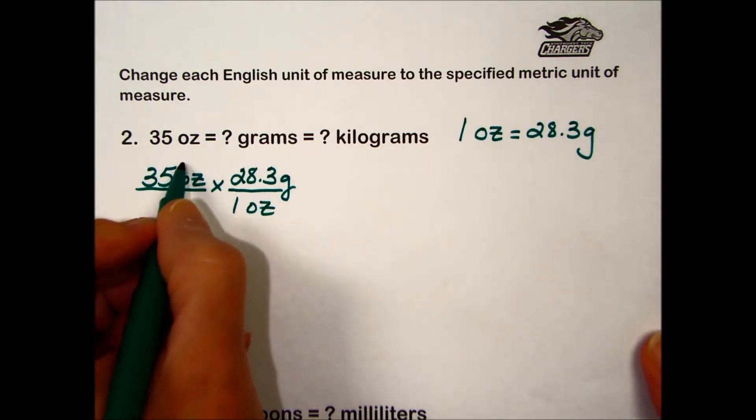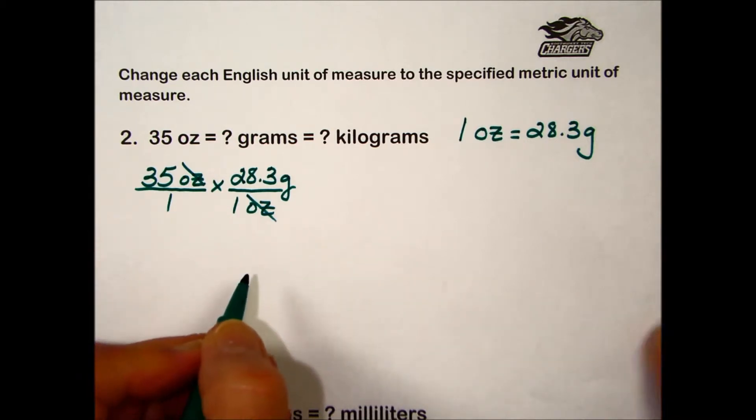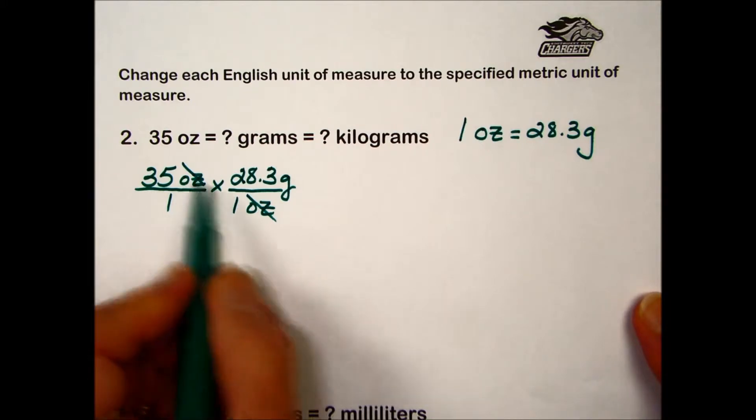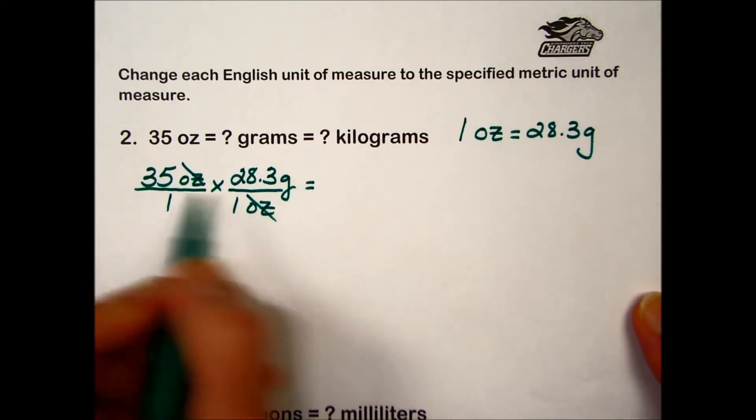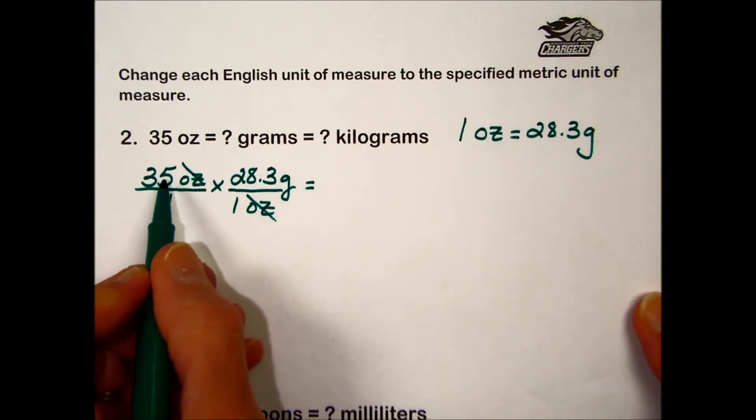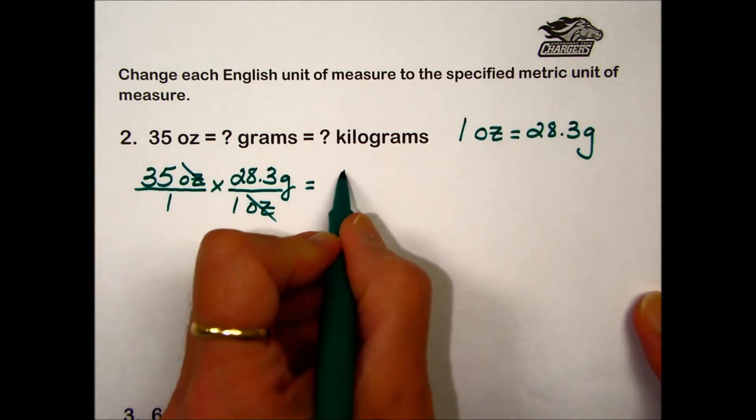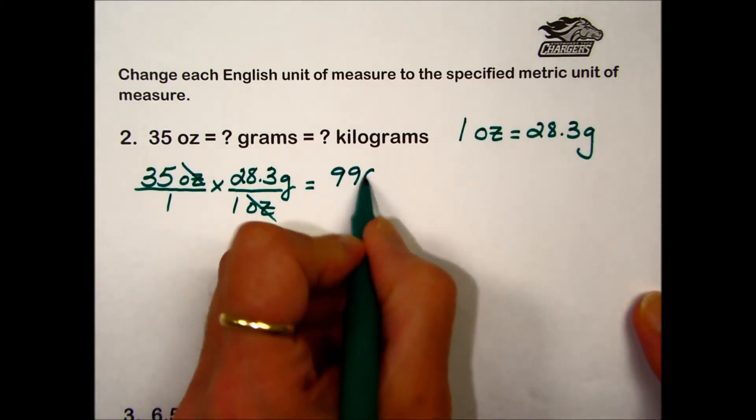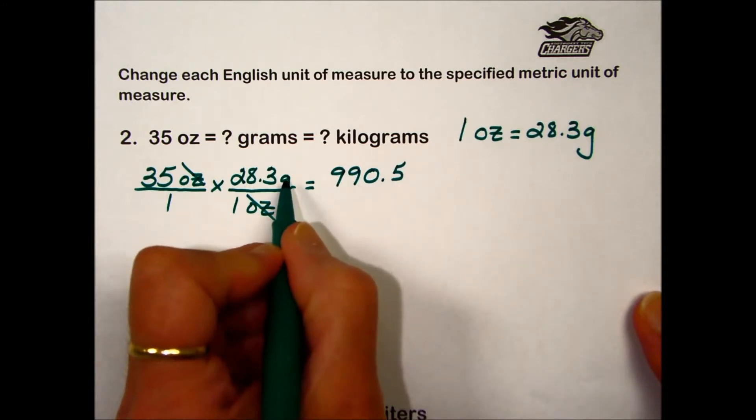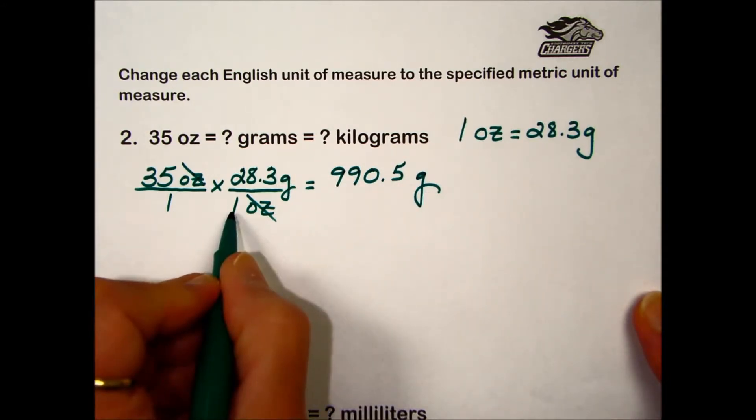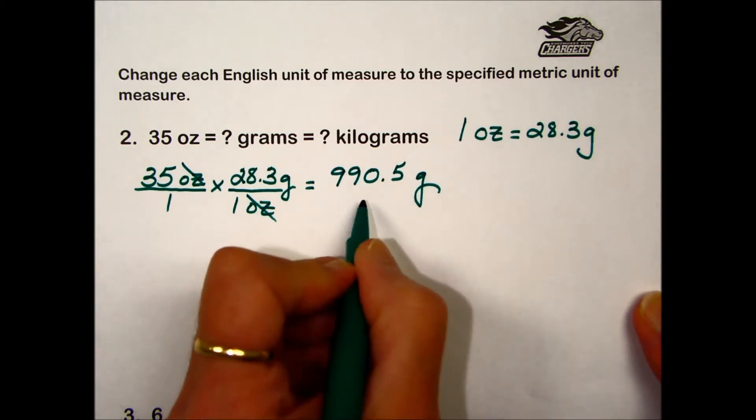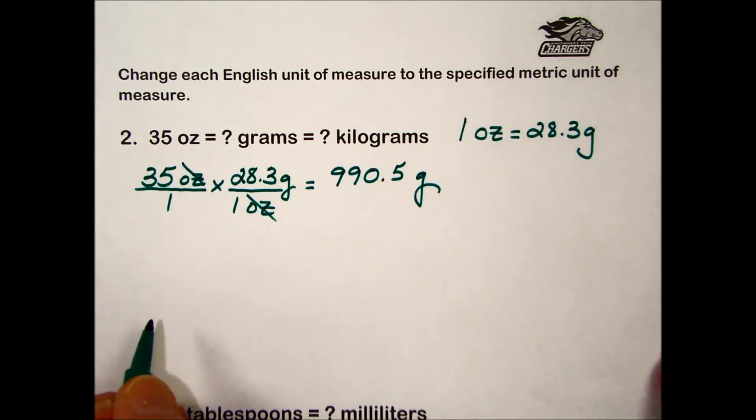Simplifying the fractions, anytime you have something common in the numerator and the denominator we cancel out. Ounces over ounces would give us one. Simplifying the fraction we have numerator values multiplied together gives us 990.5. The unit is in grams. In the denominator we have one. Dividing this number by one is not going to change its value.